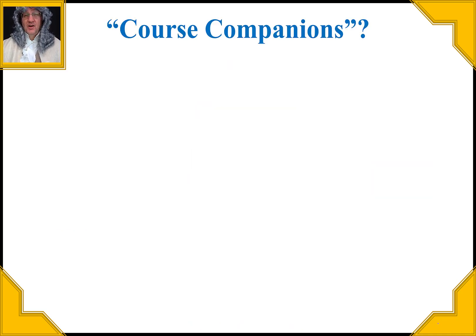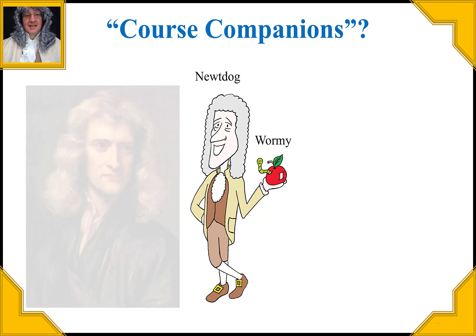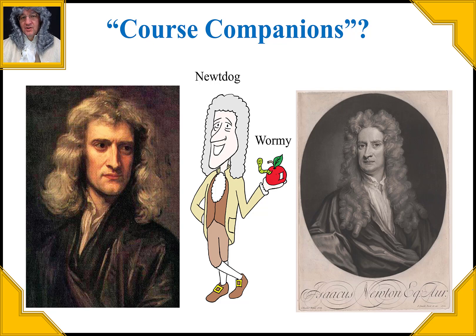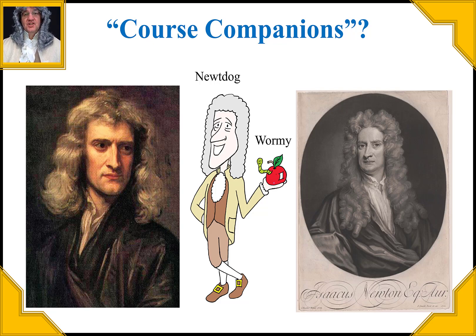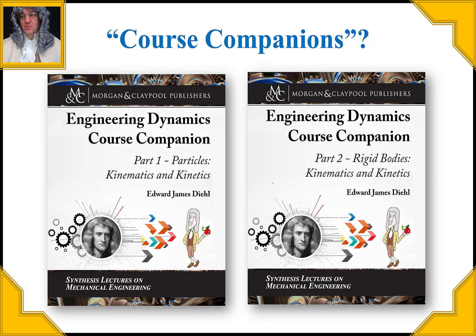What do I mean by course companions? Well, on one level it's Newt Dogg — Sir Isaac Newton — and his buddy Wormy. Sir Isaac Newton here is a young man in a portrait by Godfrey Kneller. He got a little older and was wearing a powdered wig eventually, so this is my representation of Newt Dogg.